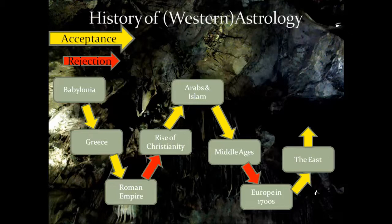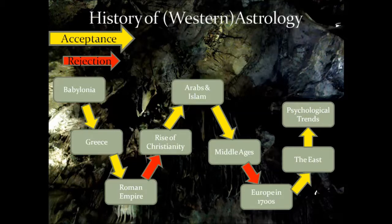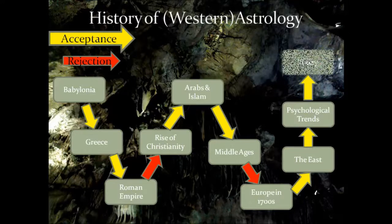India also used astrology extensively, which inspired many physicians to explore more of this lost art. Then astrology became part of the movement during the rise of psychology in the 19th and 20th centuries with Jung and Freud — this was the time when personalities and human behavior were studied extensively. The fact that astrology could bring its own personality theories based on the 12 zodiac signs gave it greater acceptance, and this is where we stand today.